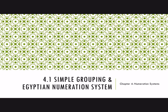Hi everyone. In this video we will take a look at the idea of a simple grouping system and the Egyptian numeration system. In the previous video we talked about tally systems. You can probably see the convenience of using a system like that — it's very simple, we just have one single symbol. But the bad thing is that if you needed to record a number like 2,000, you'd have to write 2,000 different tally marks, and that's quite time consuming. So a simple grouping system developed as a way to improve on this idea of keeping track of larger numbers of things.